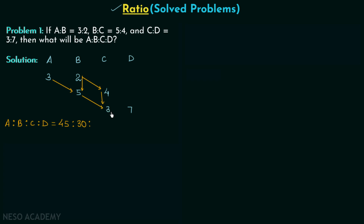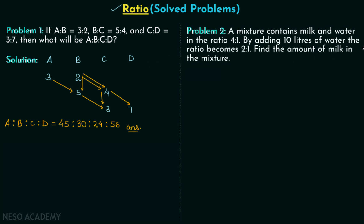The fourth term is 2 × 4 × 7 = 56. So the answer is 45:30:24:56. Remember this pattern and you will easily handle these types of ratio problems. Now we move on to problem number two.